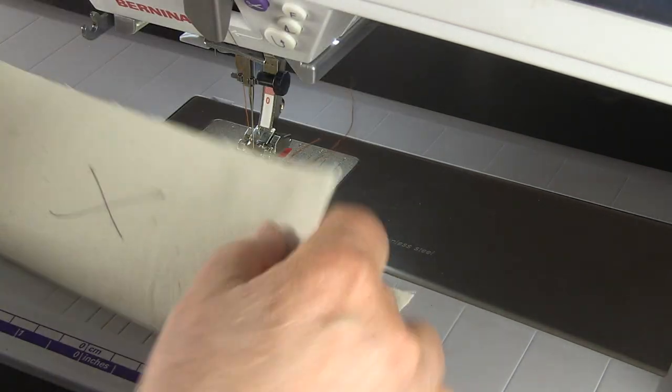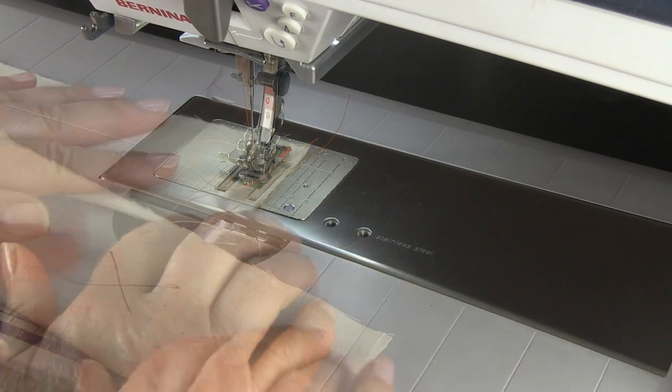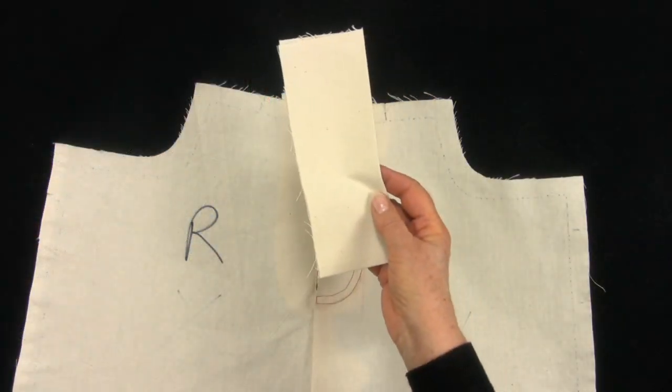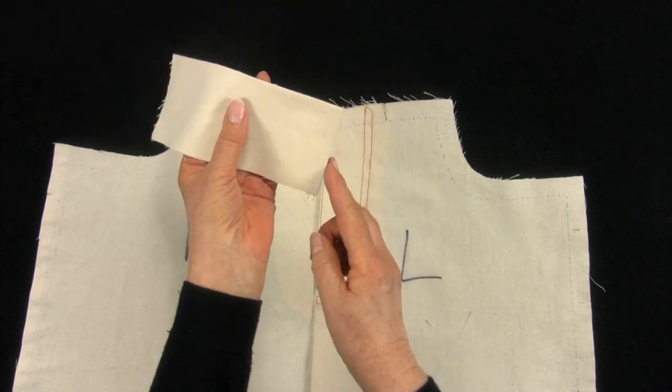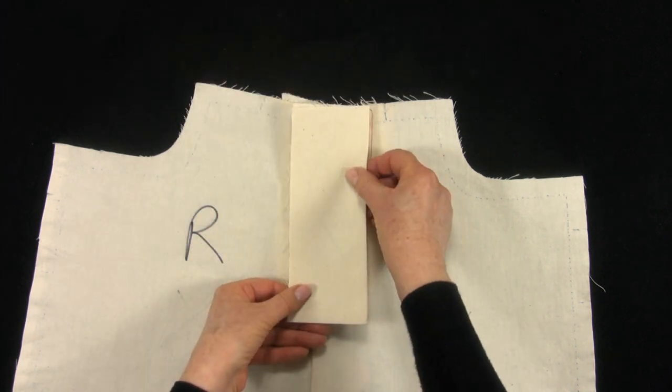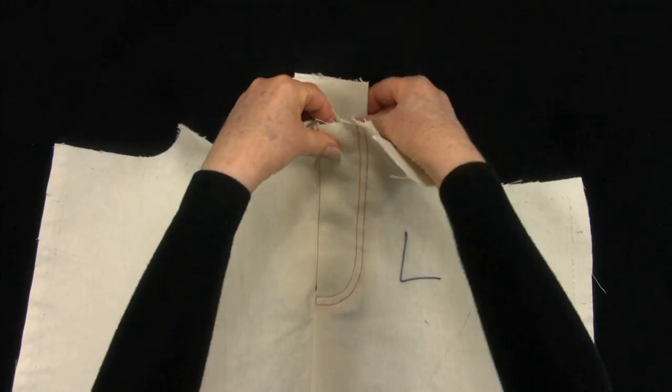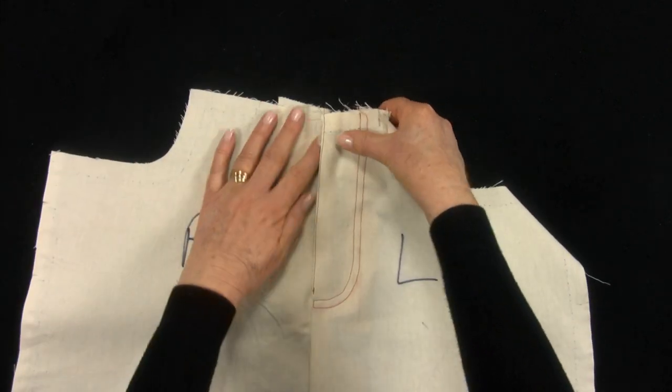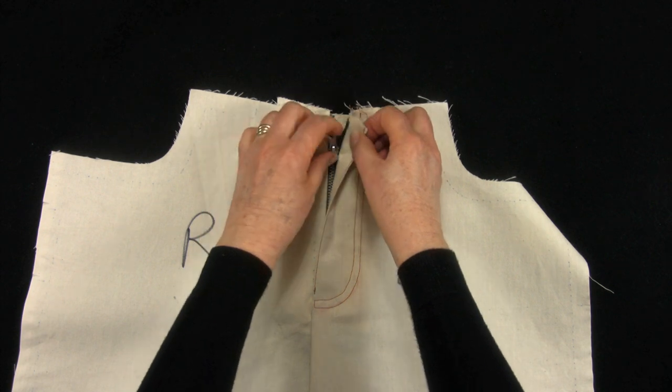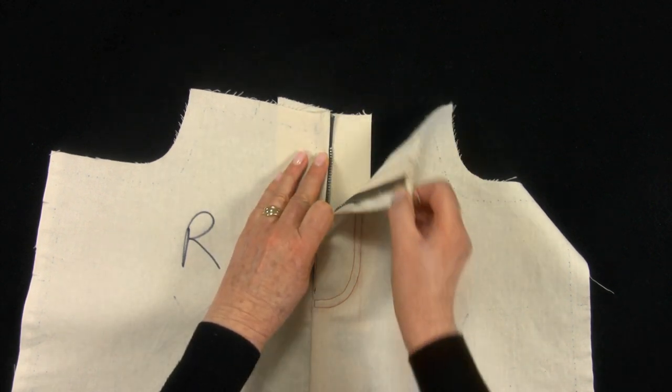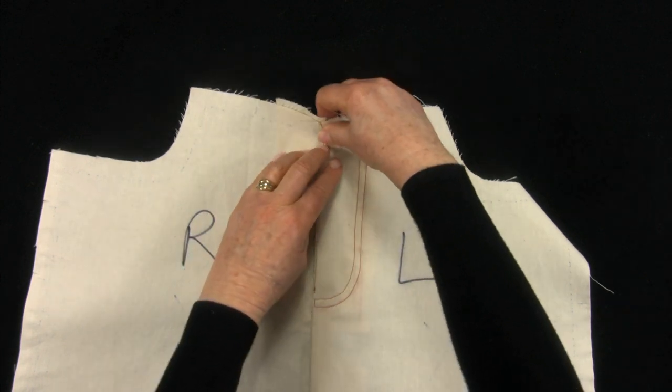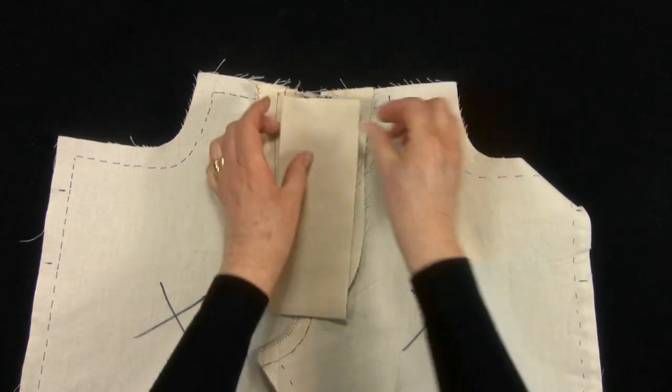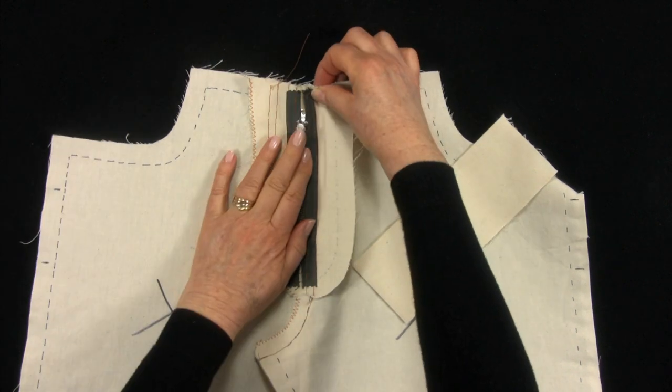Fold the fly guard right sides together and stitch the lower end. Mitre the corner, trim, turn right side out and press. The fold is on this side and this is the finished edge. The guard goes behind the zip and forms the underlap when the waistband is attached. You can shape the lower edge of the zip guard if you prefer, but it's not on show.